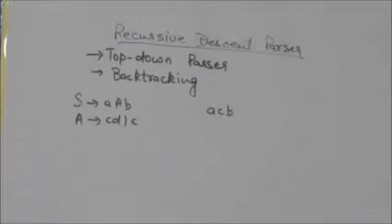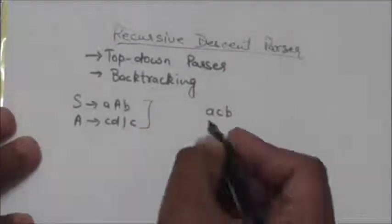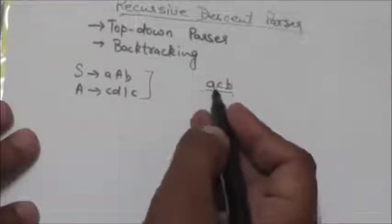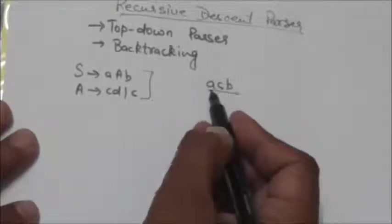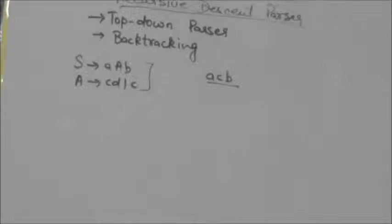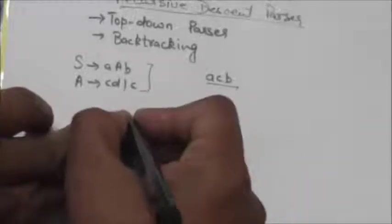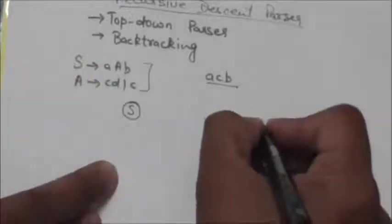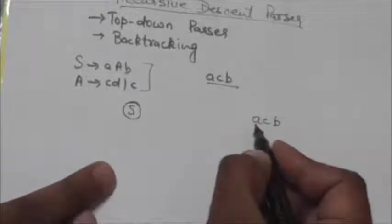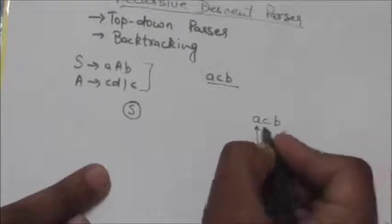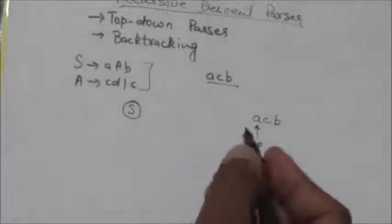This recursive descent parser also uses backtracking. Suppose this grammar is given to us and we have to do the syntax analysis of the string of terminals 'acb'. The recursive descent parser attempts to construct the derivation tree for this string. Initially it constructs a tree having a single node S, which is the start symbol of this grammar, and the input pointer points to the leftmost symbol 'a'.